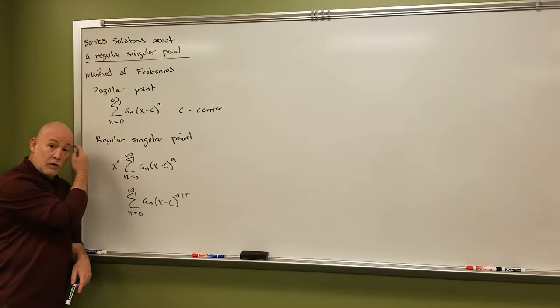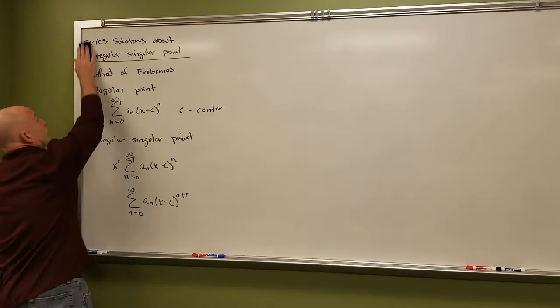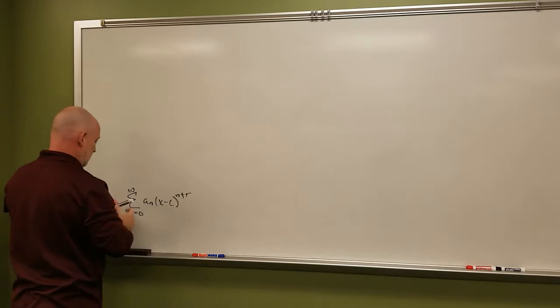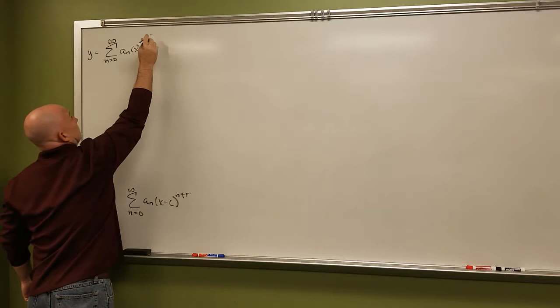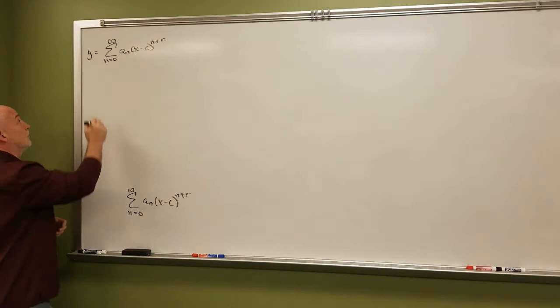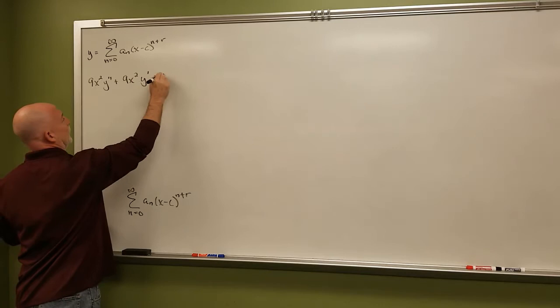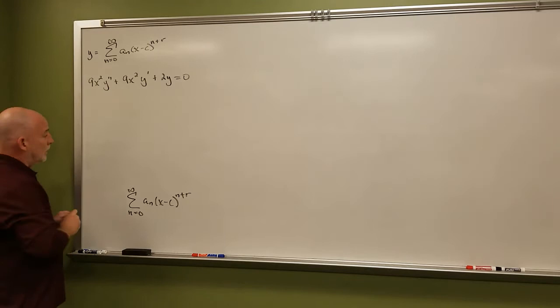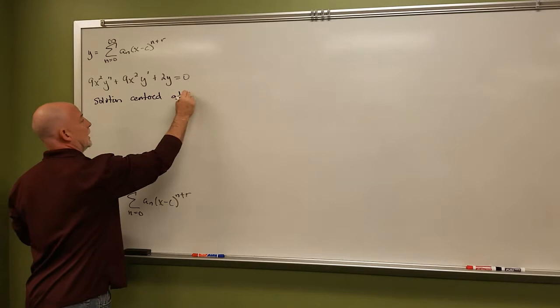Notice we've introduced another variable r that we have to figure out in order to come up with our two linearly independent solutions. For this particular example, let's take a look at the differential equation 9x²y'' + 9x²y' + 2y = 0, and find a power series solution centered at x = 0.